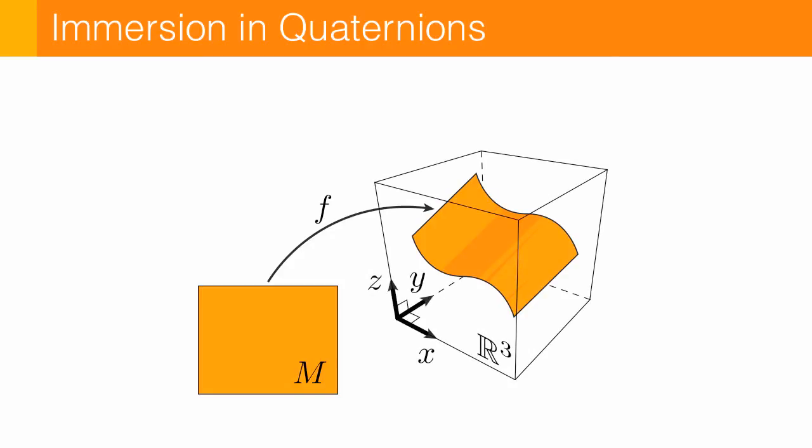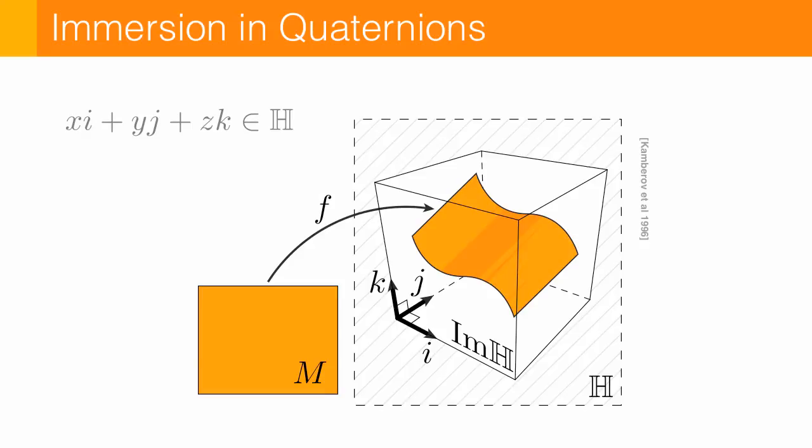But in our case, we're going to gain a lot more insight by working with the imaginary quaternions. And all this means is every point x, y, z in R3 now becomes a point xi plus yj plus zk in the quaternions H. And so now we can take advantage of this complex quaternion product that makes it easy to express certain geometric relationships.